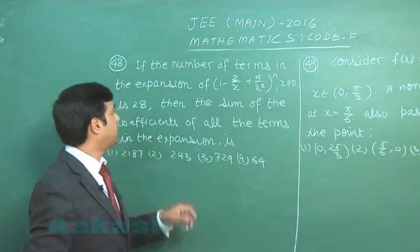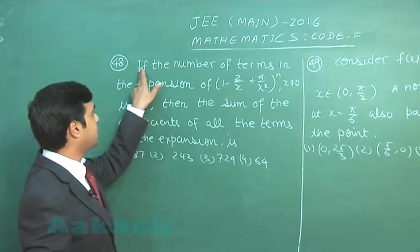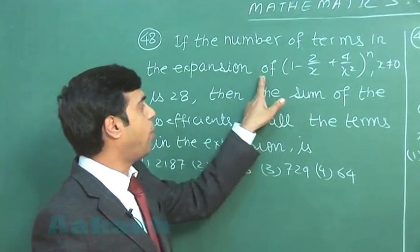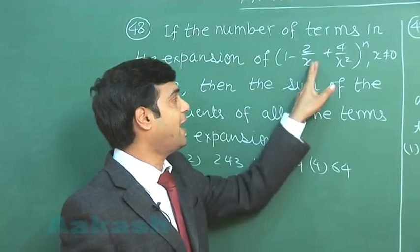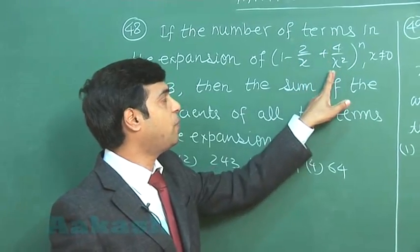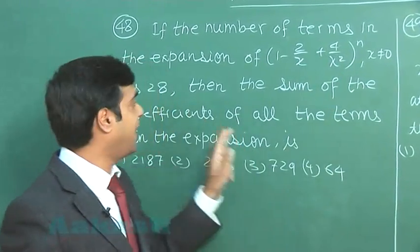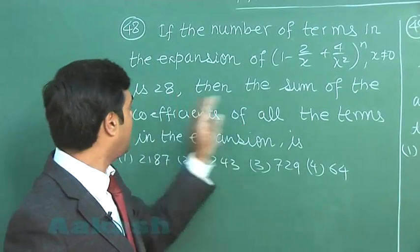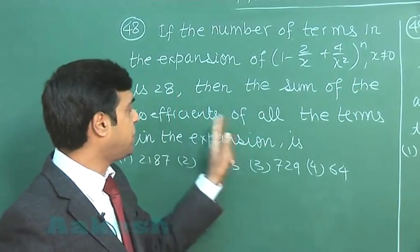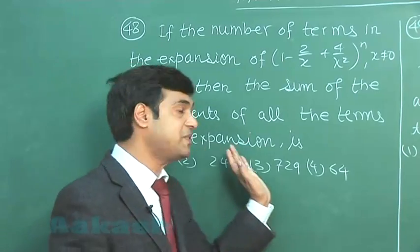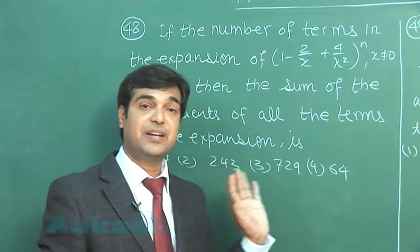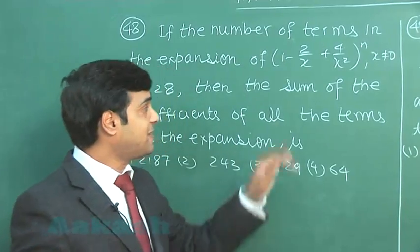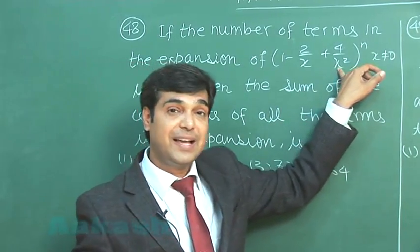Let us consider question number 48. If the number of terms in the expansion of (1 minus 2/x plus 4/x²) to the power n is 28, then the sum of the coefficients of all the terms in the expansion is. When I expand it, I can simply see the highest power for x will go in the denominator as 2n.